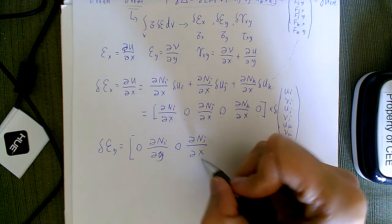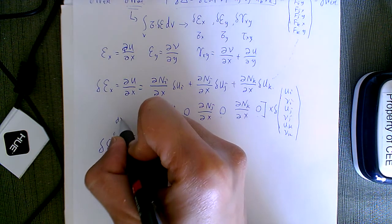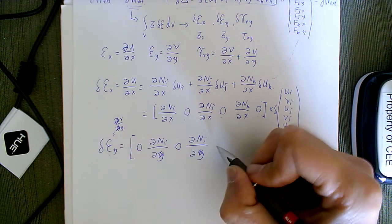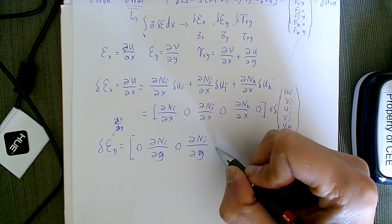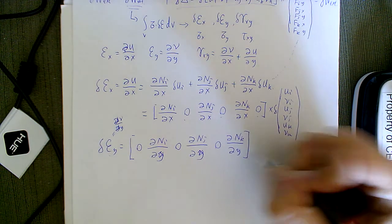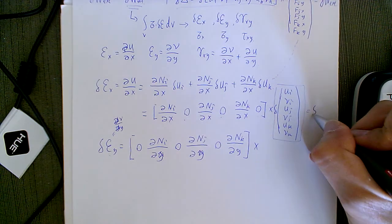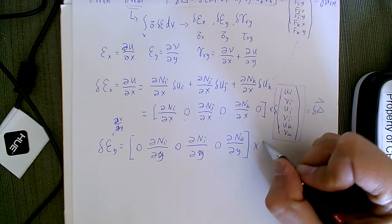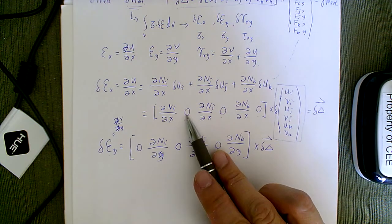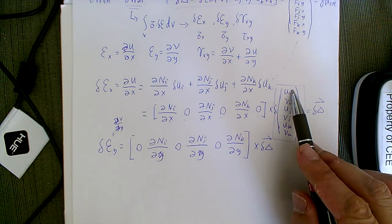Similarly, for εy = ∂v/∂y, the corresponding row of the B-matrix is [0, ∂Ni/∂y, 0, ∂Nj/∂y, 0, ∂Nk/∂y] times the displacement vector δ. The placement of zeros here is opposite to the εx row, ensuring those terms apply to v rather than u.